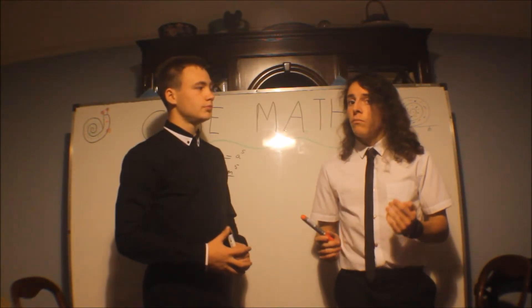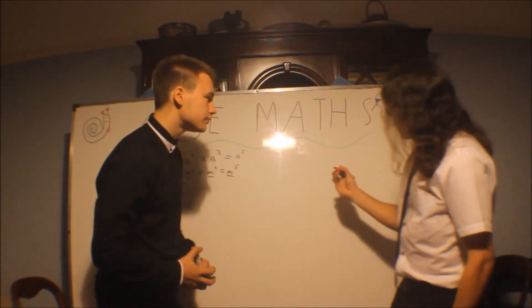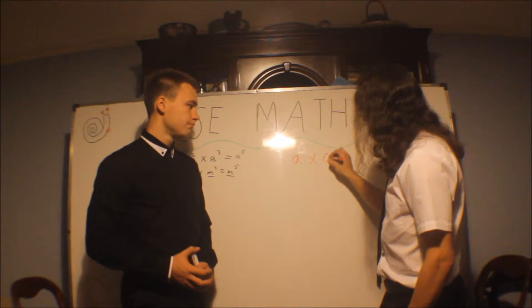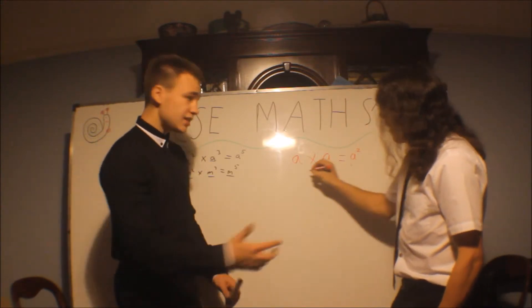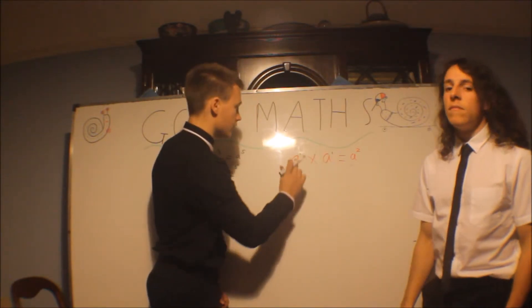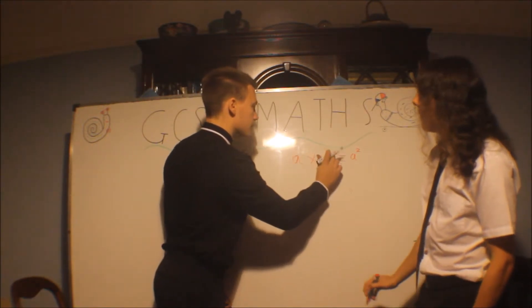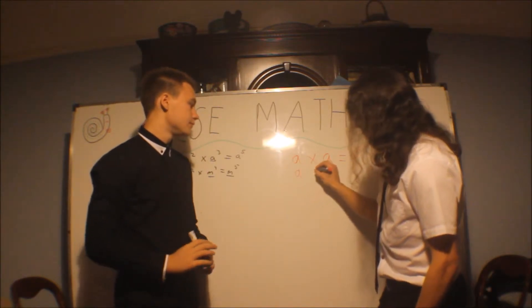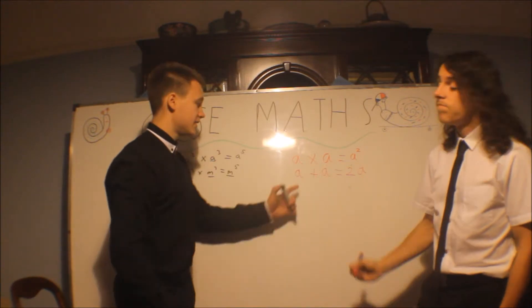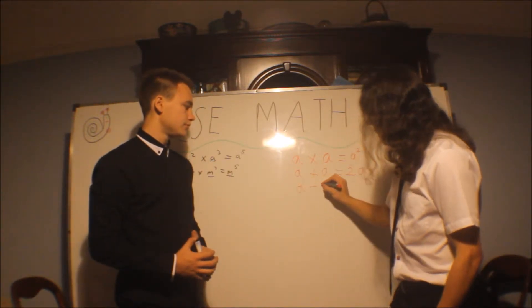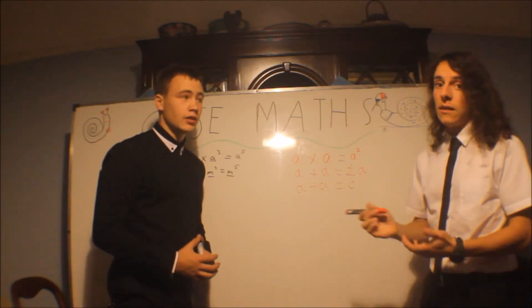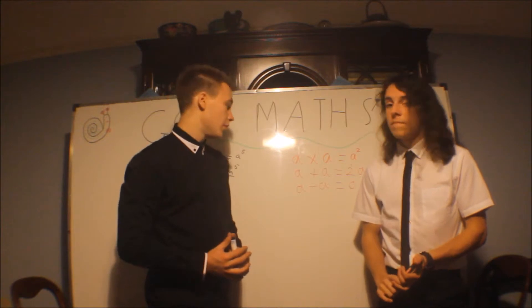There are a few rules you've got to know, but you probably know them already. We'll go through them anyway. There's a times a, which is just a squared — it's just the adding-the-powers rule, where each a is to the 1. Then a plus a, which is just two lots of a. And a minus a equals zero.